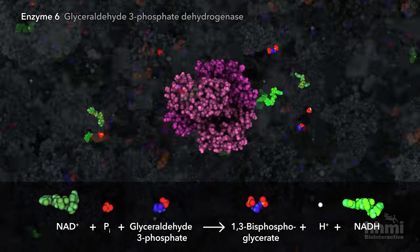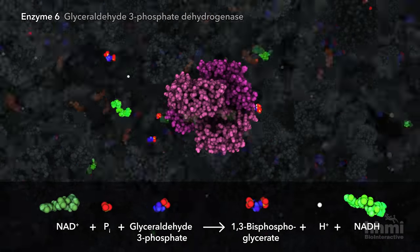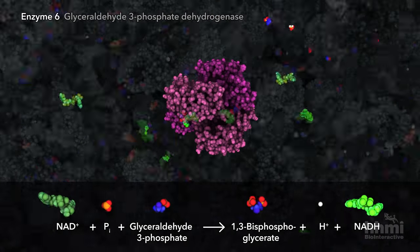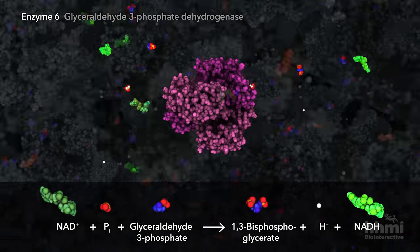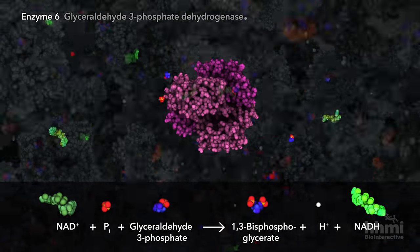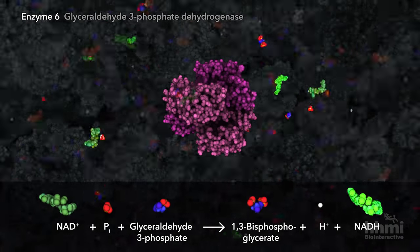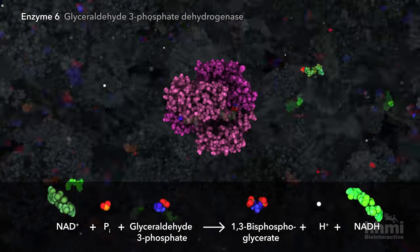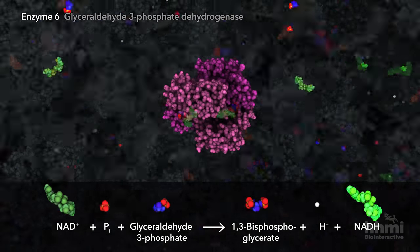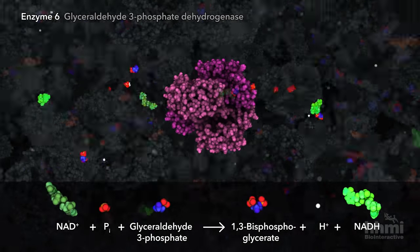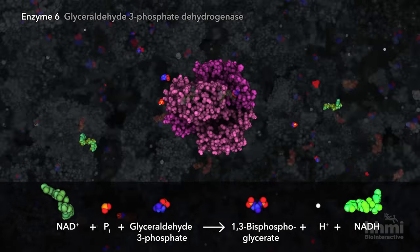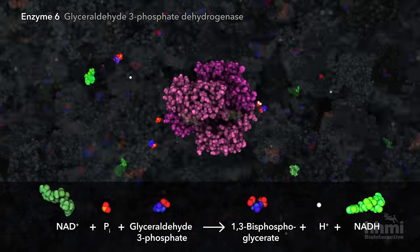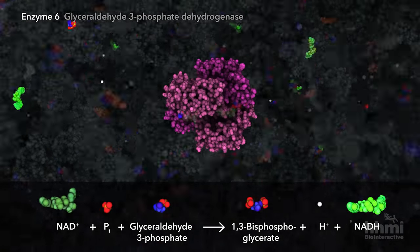The sixth enzyme adds a second phosphate to glyceraldehyde-3-phosphate, creating 1,3-bisphosphoglycerate, while two electrons are transferred to NAD+, which is reduced to NADH.